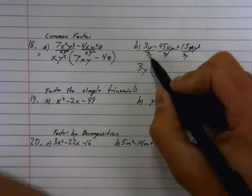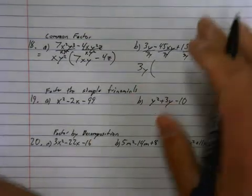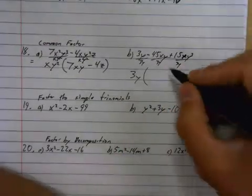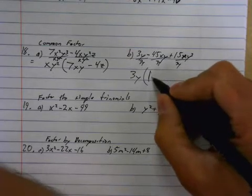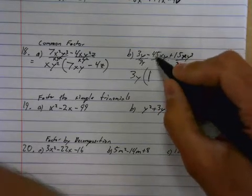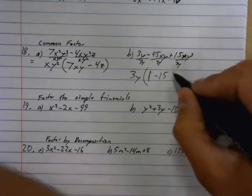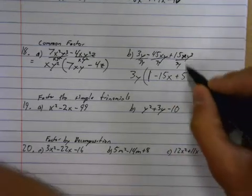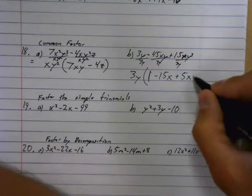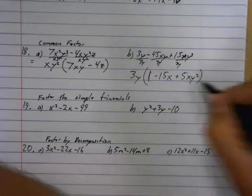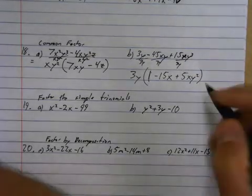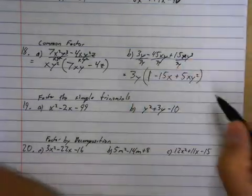When 3y gets divided by 3y, it does not go away. So back up here, 12 minus 12, that goes to 0. 3y divided by 3y does not go to 0. It goes to 1. Make sure you have that 1 there. This goes to negative 15x, because the y is cancelled out. And this goes to 5xy squared, because there were three y's there. You divided one of them out, so it's still just two y's multiplying there. Okay, so that is common factoring.